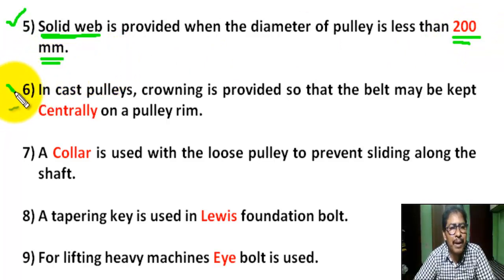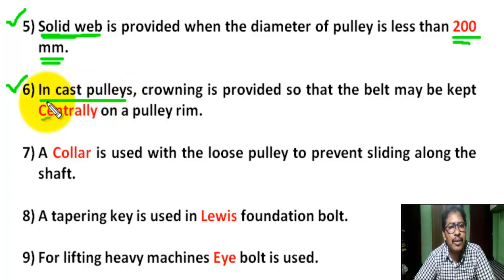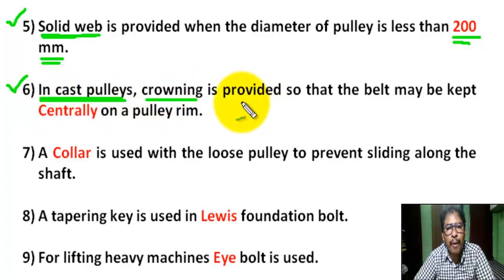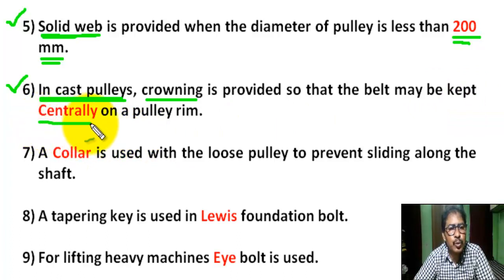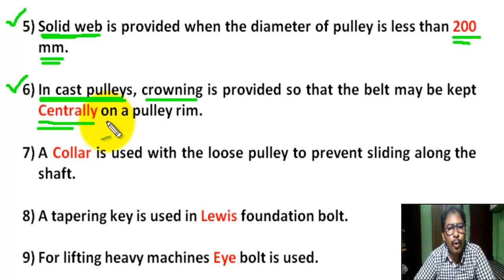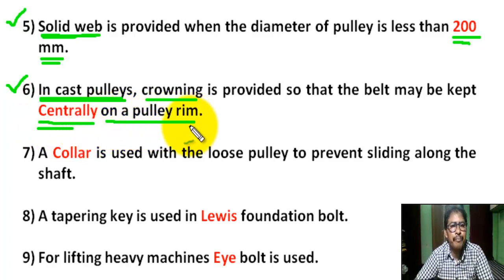Question 6: In a cast pulley, crowning is provided so that the belt may be kept centrally on the pulley rim.